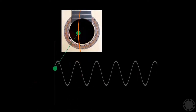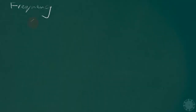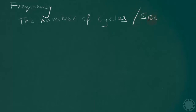But in the second part, per second there are more cycles, because the string is vibrating faster and completing more cycles every second. This is what frequency is — frequency is the number of cycles per second. It is measured in Hertz (Hz).